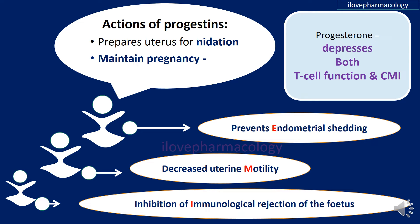Looking at the various actions of progesterone: the main function of progesterone is preparation of the uterus for implantation and maintenance of pregnancy. It is mainly responsible for preventing endometrial shedding, decreasing uterine motility, and inhibiting immunological rejection of the fetus — since progesterone depresses both T-cell function as well as cell-mediated immunity.